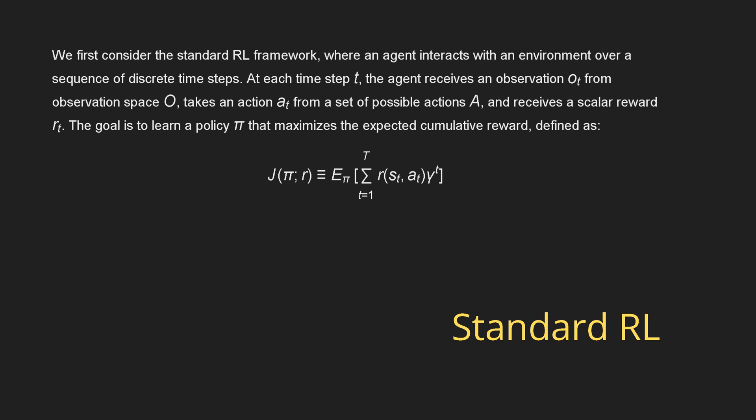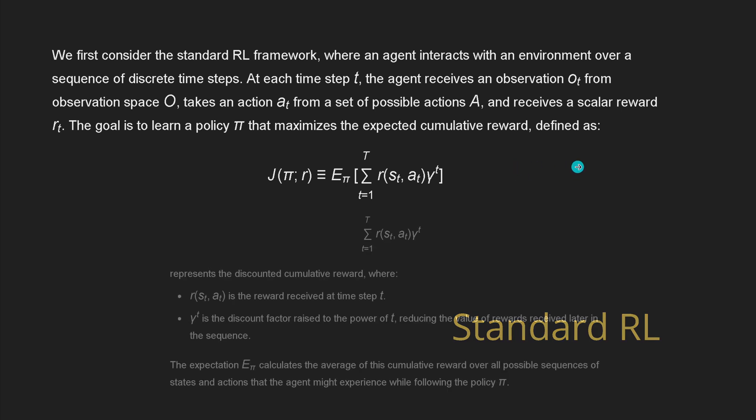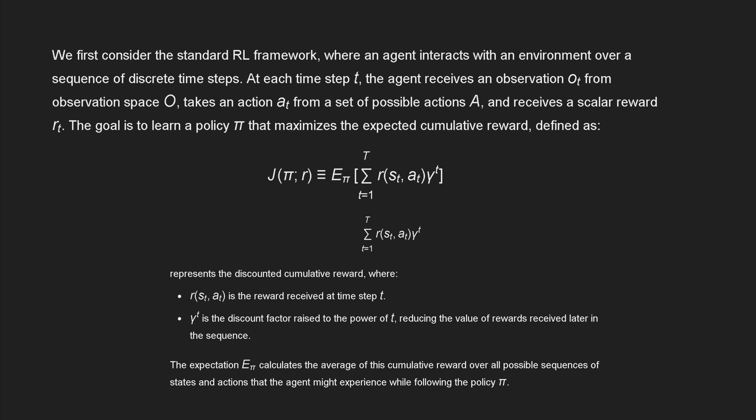For beginners, let's review the standard reinforcement learning framework. An agent interacts with an environment over a sequence of discrete time steps. At each time step, the agent receives an observation o_t from observation space O, takes an action a_t from action space A, and receives a scalar reward r_t. The goal is to learn a policy π that maximizes the expected cumulative reward.